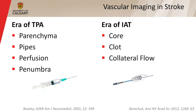We've now entered the era of intra-arterial therapy, and we start to think about it slightly differently. We start to think about the Core — the ischemic core — the Clot (what we're going to snare and retrieve), and Collateral flow, because we've now started to appreciate that there's a lot of collateralization in the brain. Some people have better collaterals than others, and this can affect the outcome. So we're now looking at three Cs.